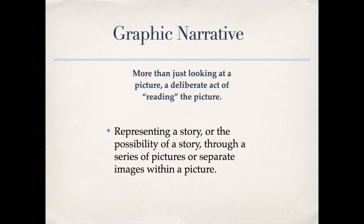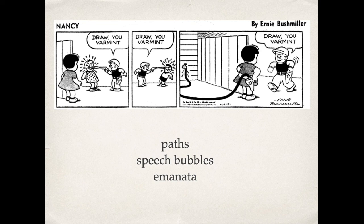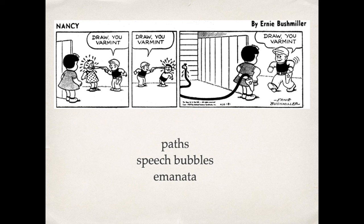In a typical comic such as Ernie Bushmiller's Nancy, we can see a series of panels set aside by frames. In each panel we read like we would a book, from left to right, and we can see a path that leads us through it. We can see the speech bubble that hangs above with a tail that comes down, directing us to understand that the character is speaking, and water spraying and other things that let us understand certain kinds of actions.